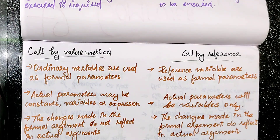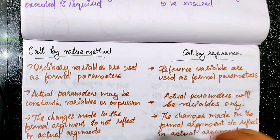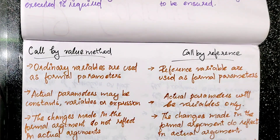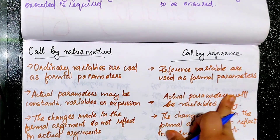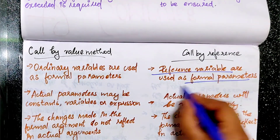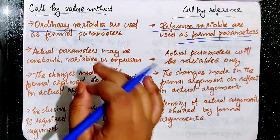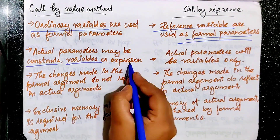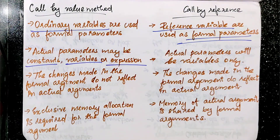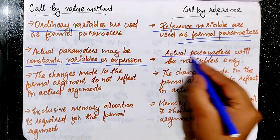So, if you ask for the answer to this question, let's go first. We have to take the call by value method: ordinary variables are used as formal parameters. Next, for call by reference, reference variables are used as formal parameters. For call by value, actual parameters can be a constant, variable, or expression. For call by reference method, actual parameters will be a variable.